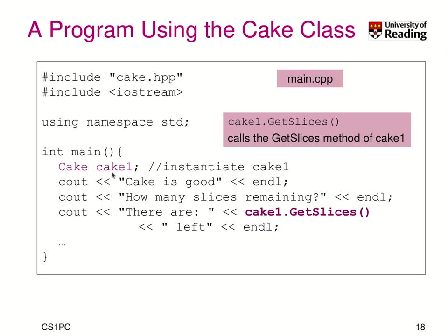This is actually a definition. We declare cake1 to be of type cake, which the compiler knows is a class. We also define it and reserve memory. When we do that, we know we reserve memory on the stack. And at this point, the constructor will be called. So when we print get_slices, we will get the answer 8.